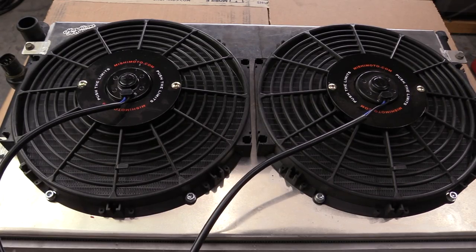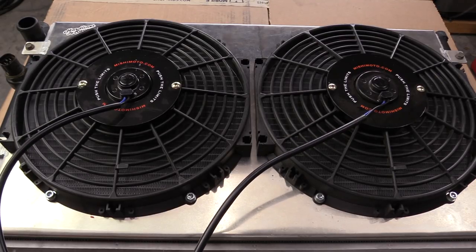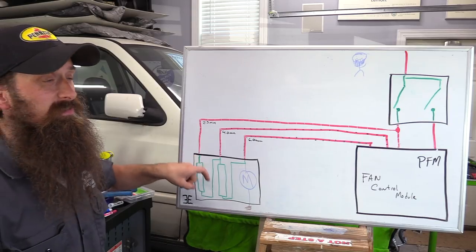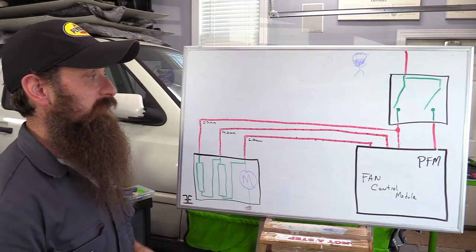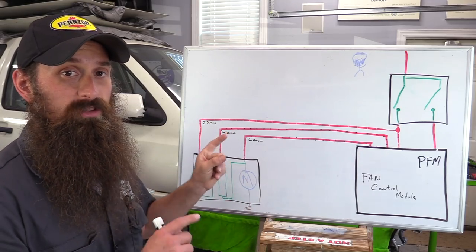So the big question is, how do we take this setup and manipulate it in a way where we can run two electric fans? And remember that this series resistor is built into the fan motor. I actually did disassemble it and try and reuse it, but it just wasn't happening. So let me show you the setup that I'm running for the GTI.